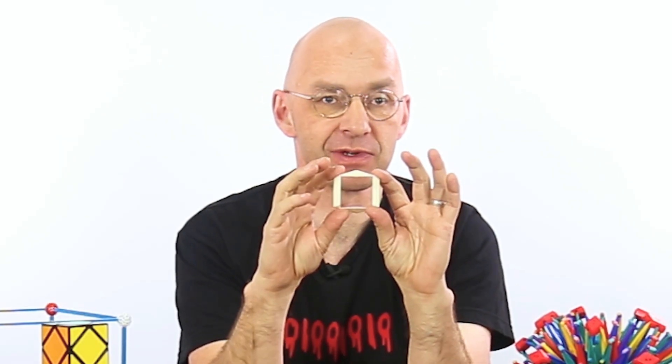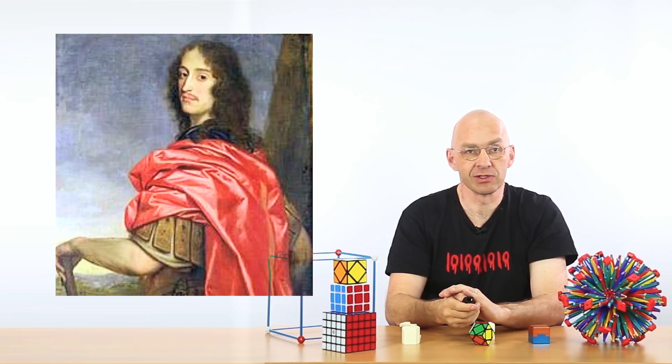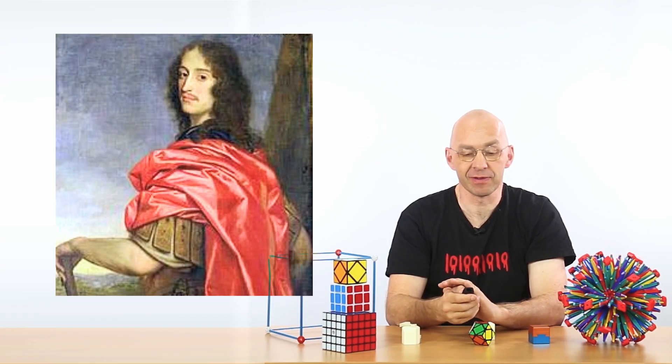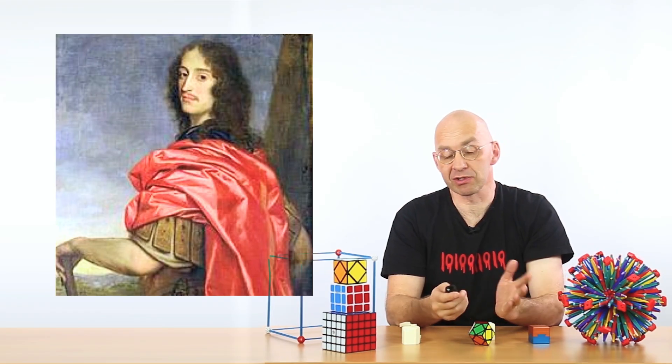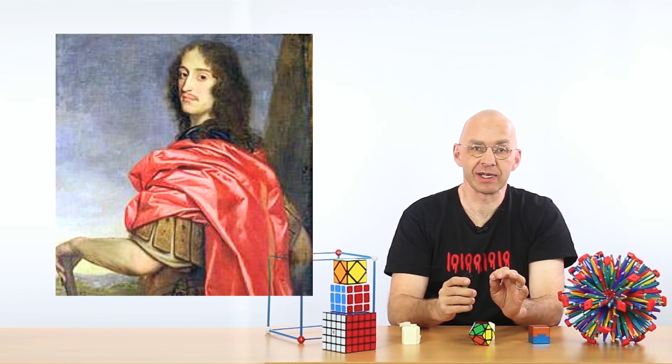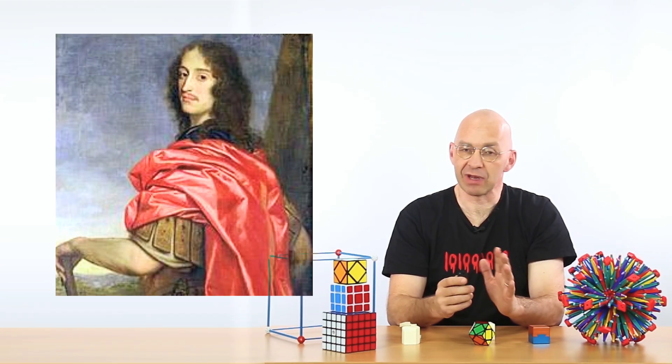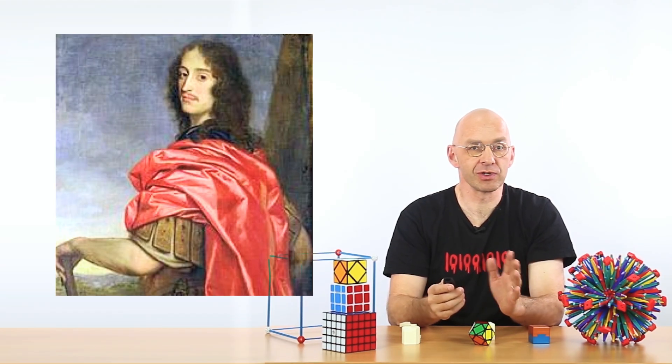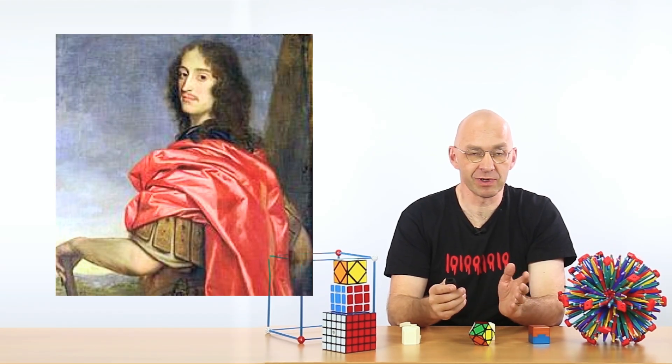And you can actually do even better. You can see I can make this square hole even bigger, and then I can pass an even larger cube through this hole. Now, the first to notice that something like this is possible was Prince Rupert, who lived in the 17th century. And he was a general, so basically in the business of killing people, but he was also quite interested in science.